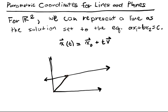X₀ is any point on that line. So X₀ could have been any point on this line. I'm going to call this X₀. And then T is some parameter. So V is some vector. Let's say this is V.